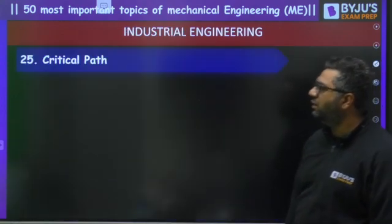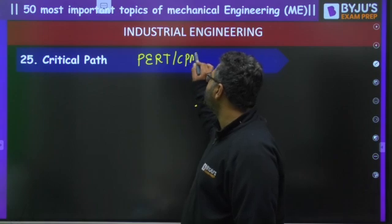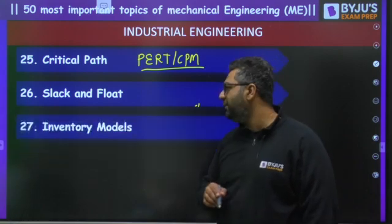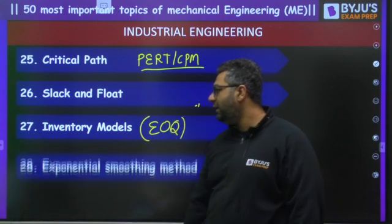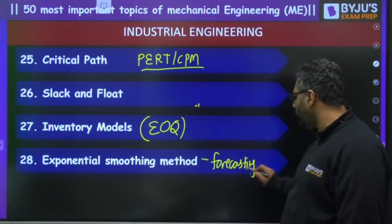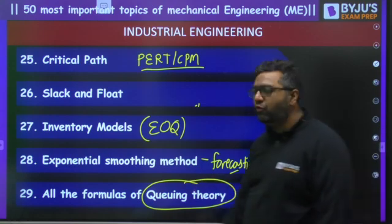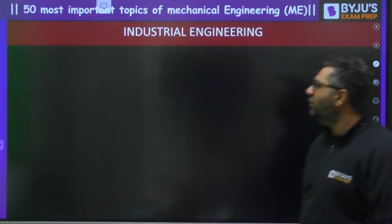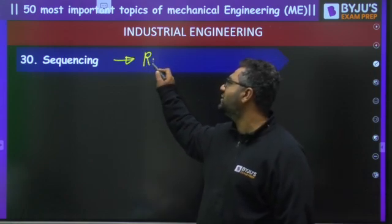Moving to Industrial Engineering: you can expect critical path from PERT/CPM, although this is not a very important subject for BARC exam. Slack and float are also from PERT/CPM. For inventory models, majorly the EOQ model is asked. Exponential smoothing method of forecasting is very very important. Remember all formulas of queuing theory — there are six or seven formulas including Little's rule and waiting time. For sequencing, you need to know all the rules from which questions can be asked.